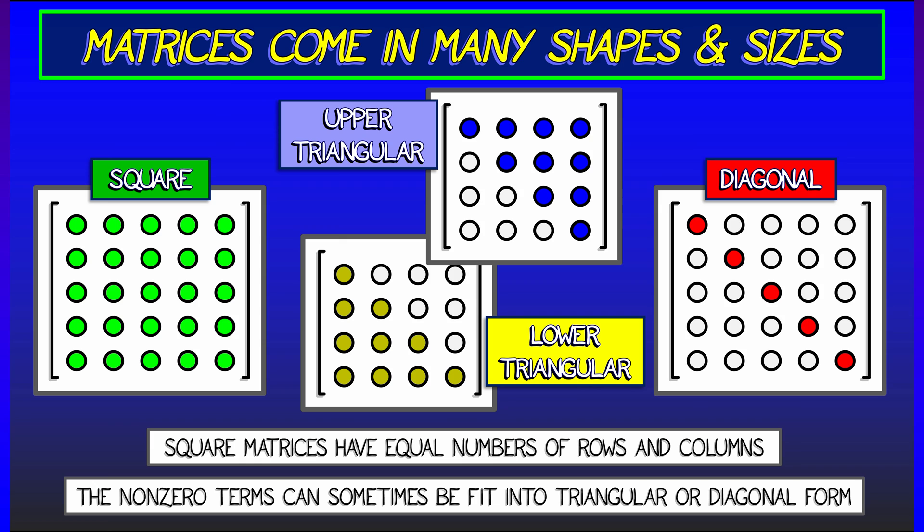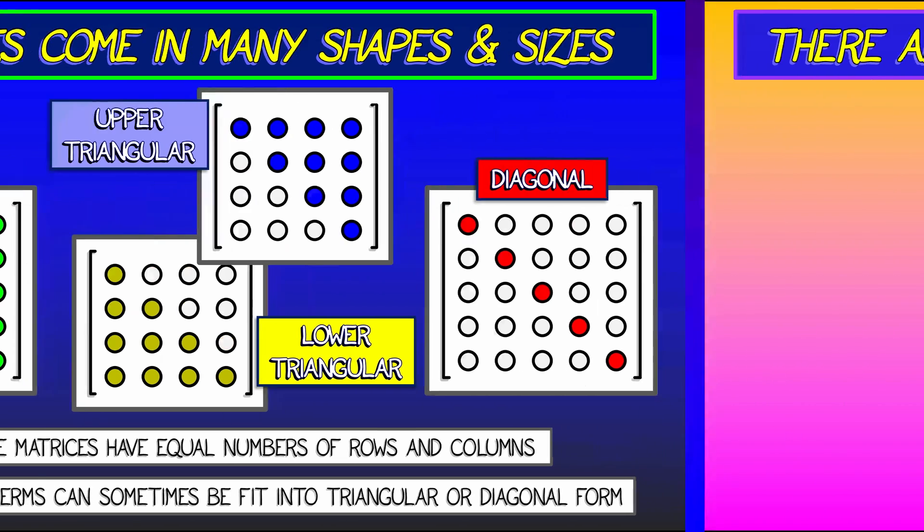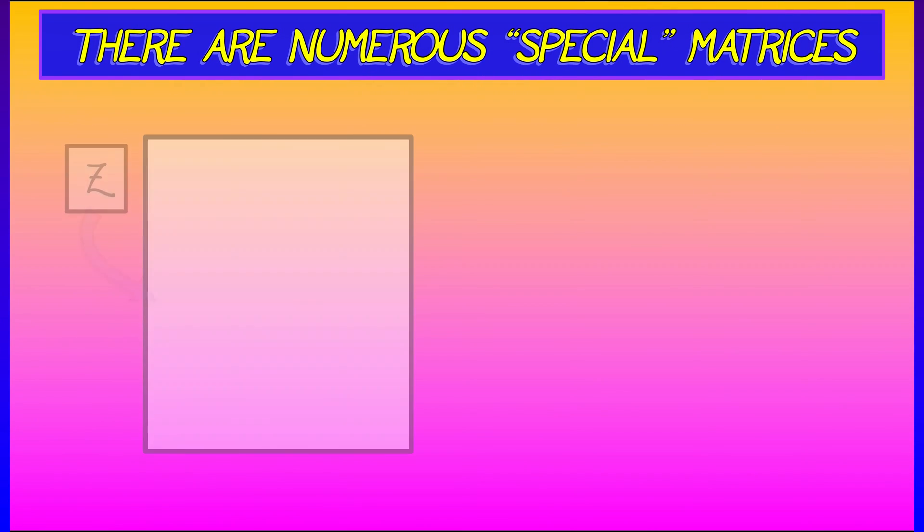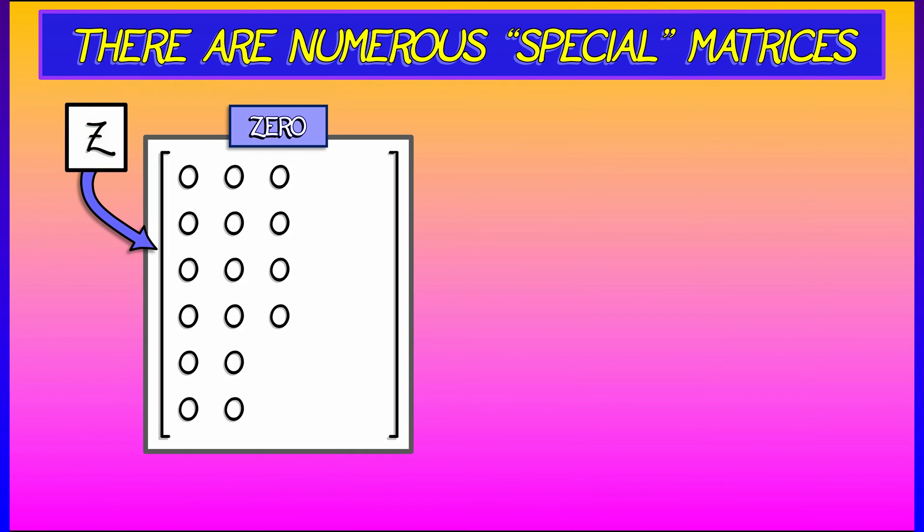There are certain special matrices, such as the zero matrix, that can be any size you want, but all of the entries are zeros.